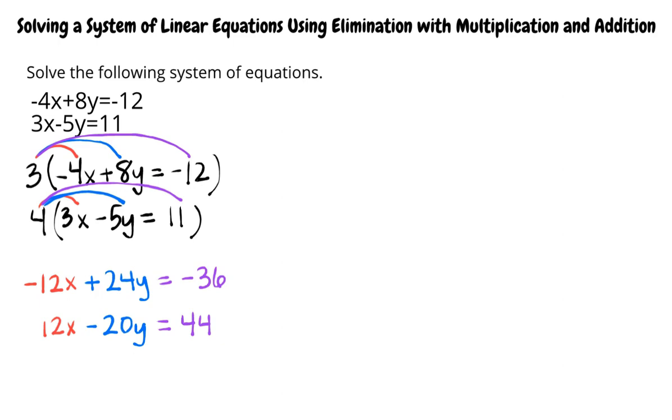Now the x term in the system of equations has the same coefficient but with differing signs. We will now add both equations together and you will see that the x terms will cancel allowing us to solve for y. Negative 12x plus 12x is equal to 0, 24y minus 20y is equal to 4y, and negative 36 plus 44 is equal to 8. We can divide both sides of the equation by 4 and write y equals 2.